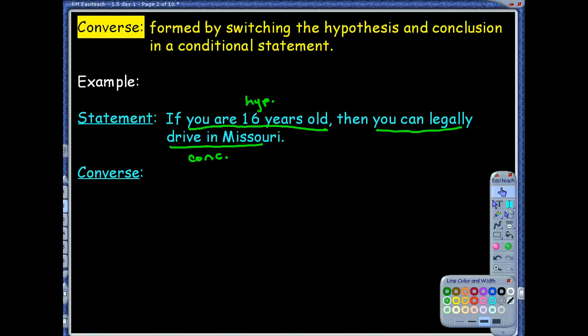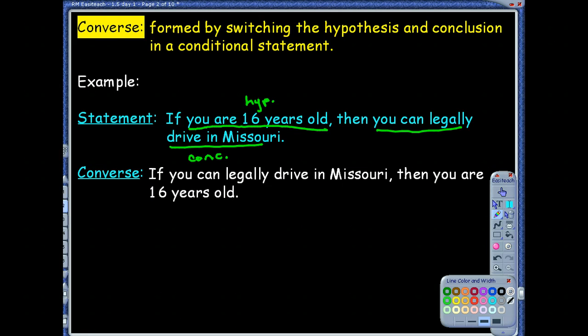We've got our hypothesis and conclusion. This is our conditional statement. The converse is when I flip-flop the conclusion with your hypothesis. So I would want to start with what? You're going to always start with if, and then instead of saying you are 16 years old, you're going to say if you can legally drive in Missouri, then you are 16 years old. Perfect. We just flip-flopped the hypothesis and the conclusion. Notice now that we still use the words if and then, but we're flipping the order of the two things.